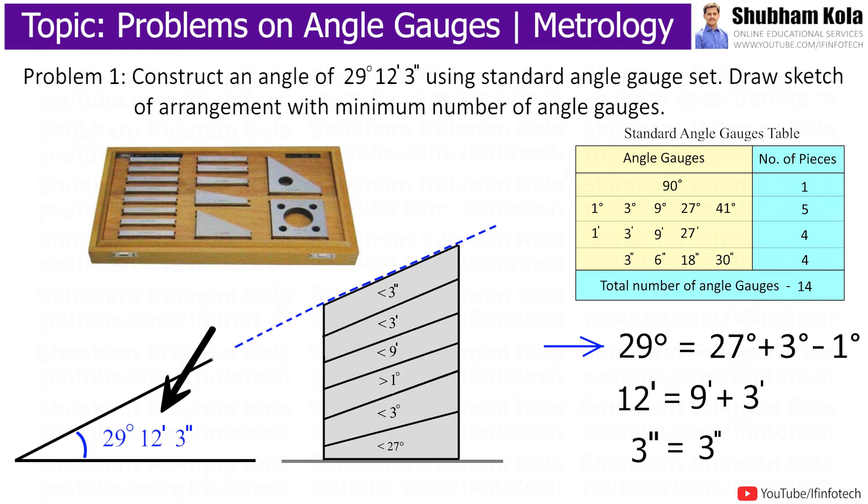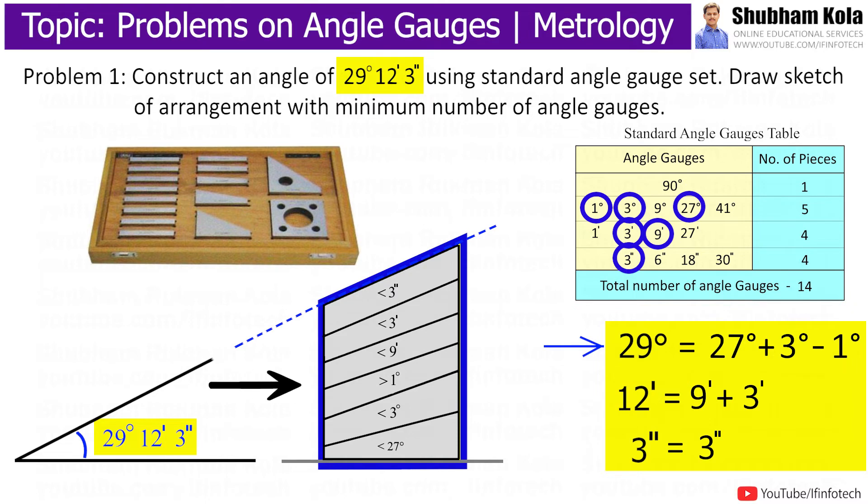In this way, we can construct an angle of 29 degrees, 12 minutes, and 3 seconds by using the minimum number of angle gauges from the standard angle gauge set.